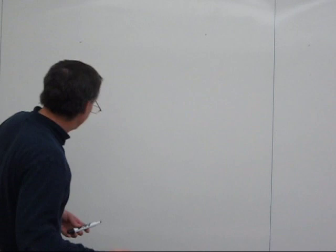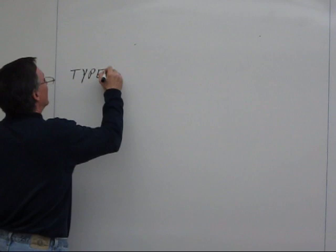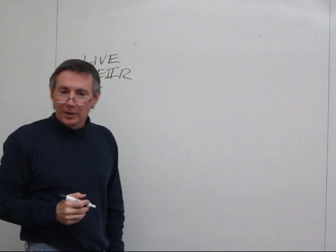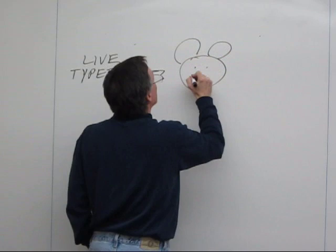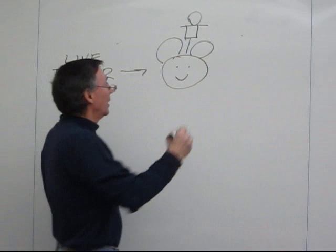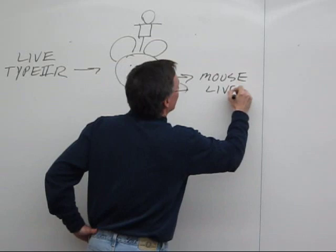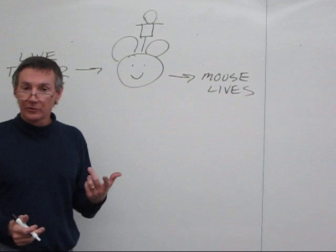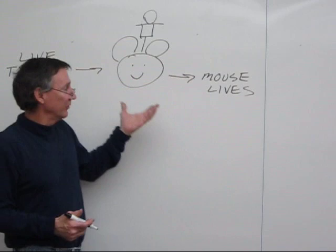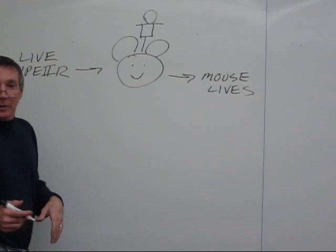So he tried some experiments with them. One thing that he did was he took some type 2R cells, live 2R cells, and he injected them into mice. And when you do that, the mouse lives. This is because the rough type cells, the 2R cells, are not virulent. The mouse's immune response and all the defenses in the mouse are able to deal with that. So the mouse lives. It doesn't get streptococcal pneumonia.